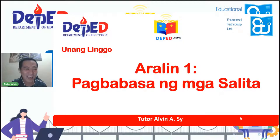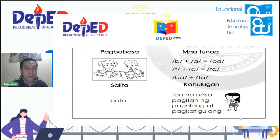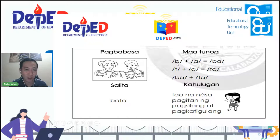Ang unang aralin natin sa linggong ito para sa ikatlong markahan ay pagbabasa ng mga salita. Hahasain namin kayo kung paano magbasa ng mga salita. Importante yan. May nakikita kayo dito sa larawan — may dalawang batang nagbabasa. Alam nyo ba bigkasin nang tama ang bawat tunog?